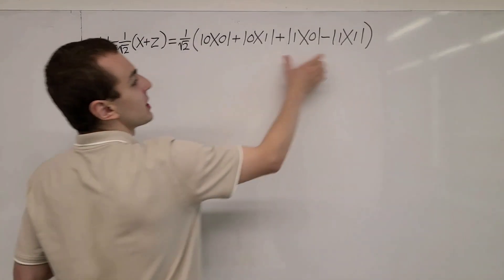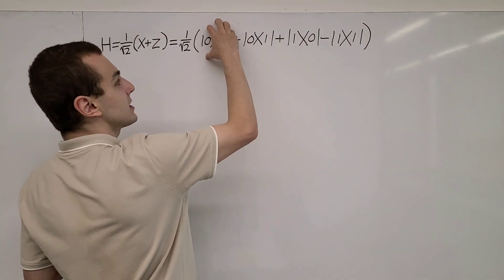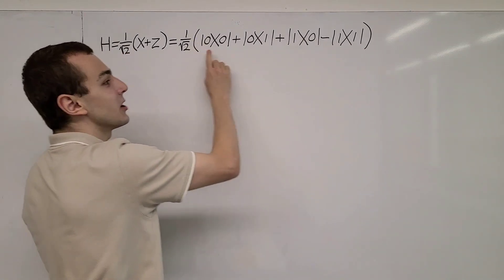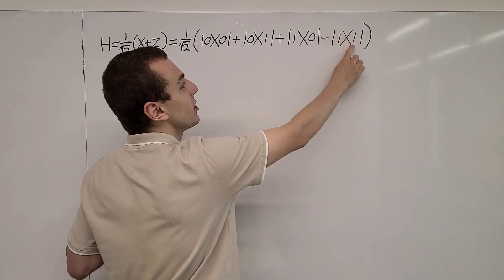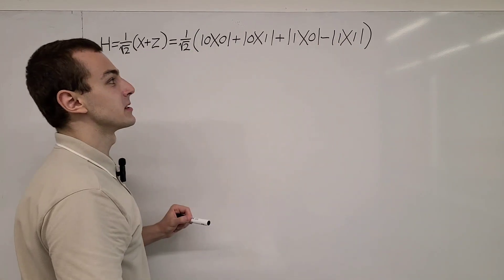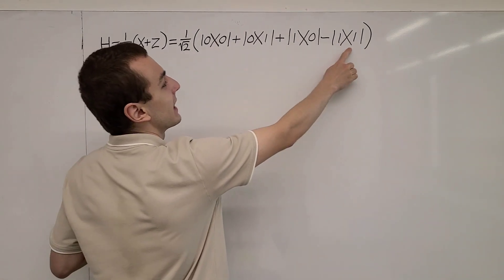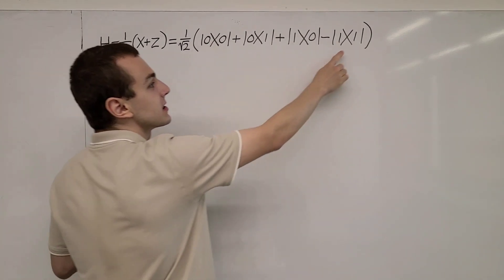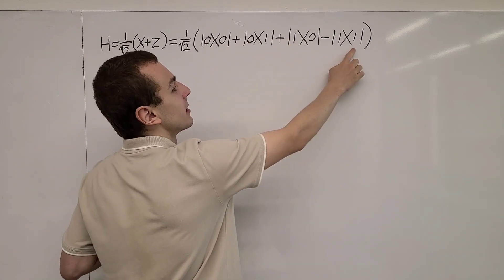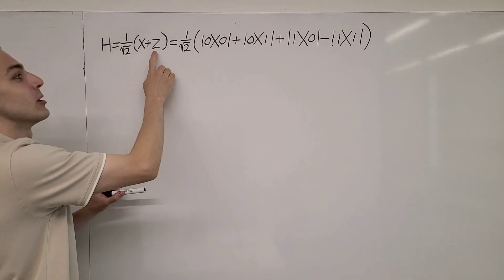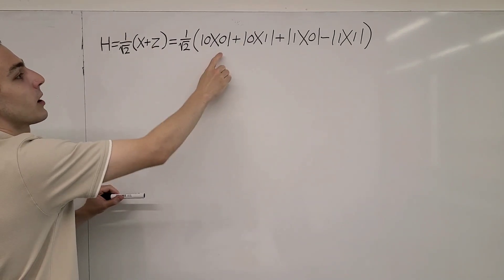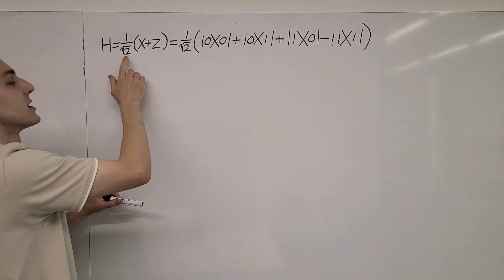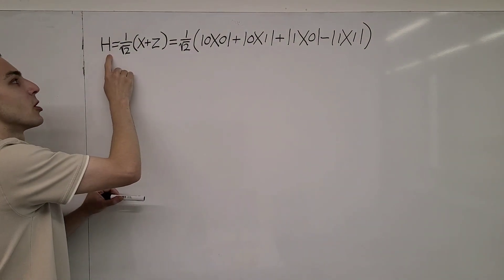The first and last ket-bra combinations are diagonal entries. We can see a +1 and a −1 as the coefficients, so these are diagonal elements corresponding to a diagonal matrix with entries 1 and −1 — that is the Pauli Z. So those two ket-bra combinations come from Pauli Z. If we take the sum and divide by the normalization factor, we get the Hadamard gate.